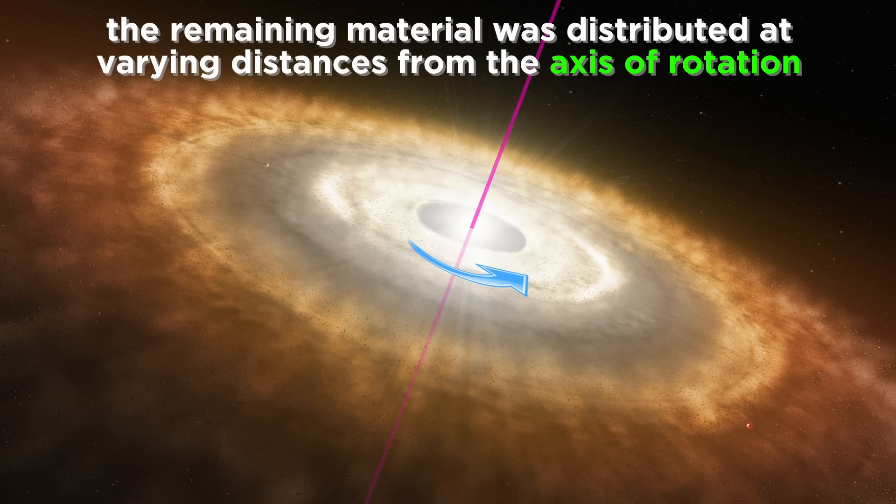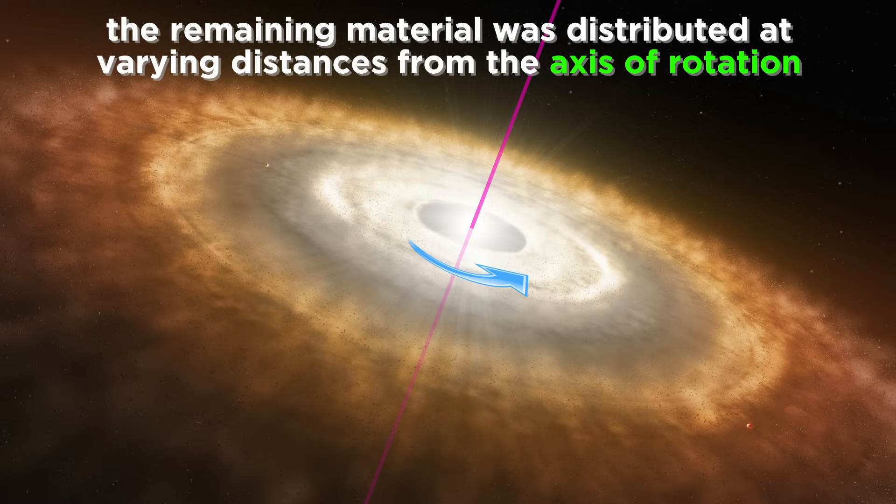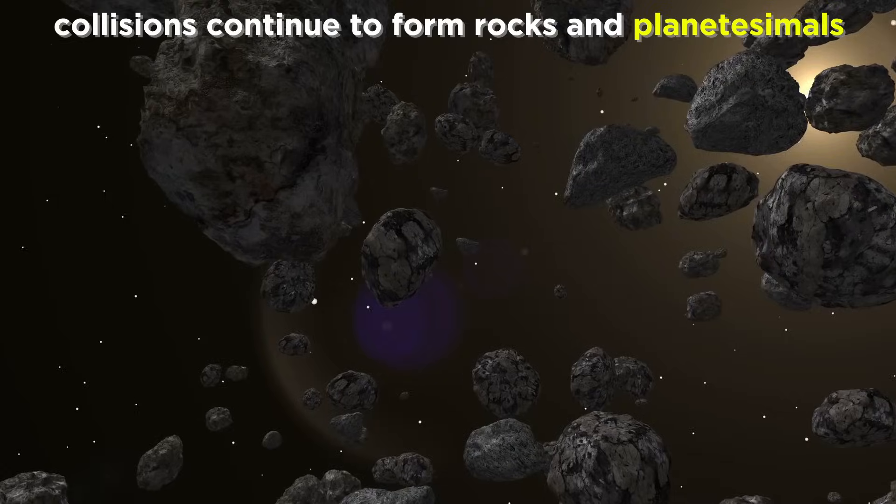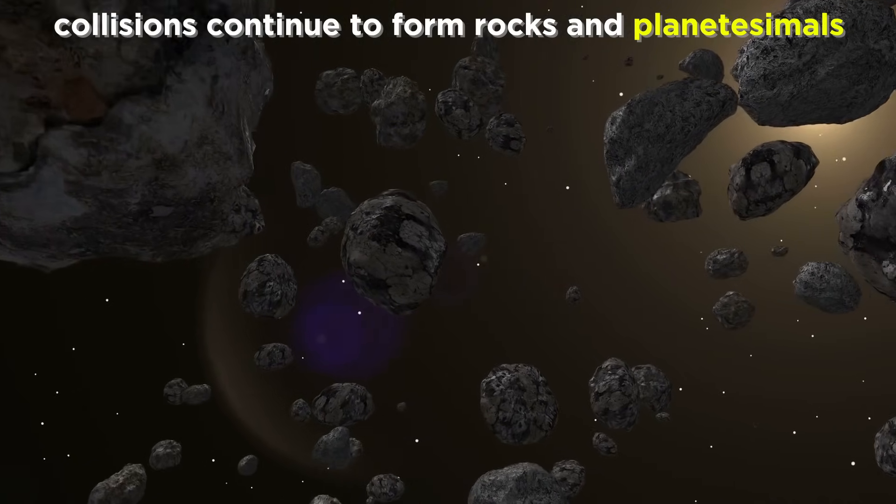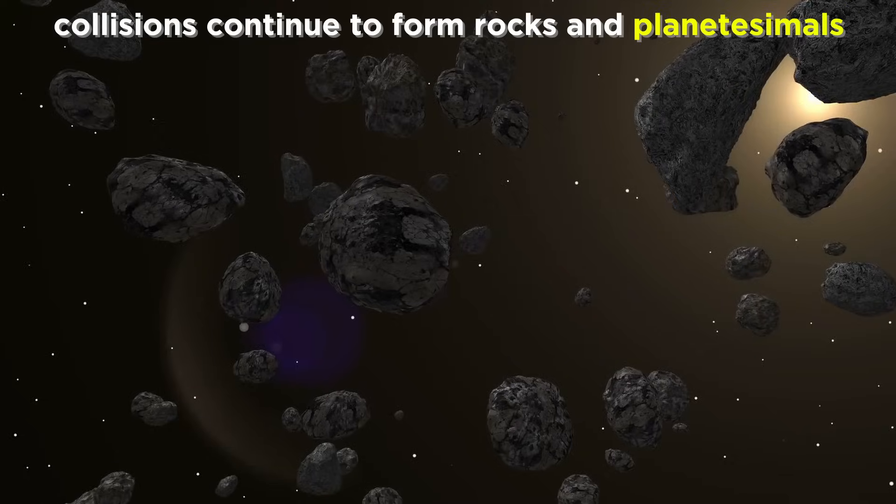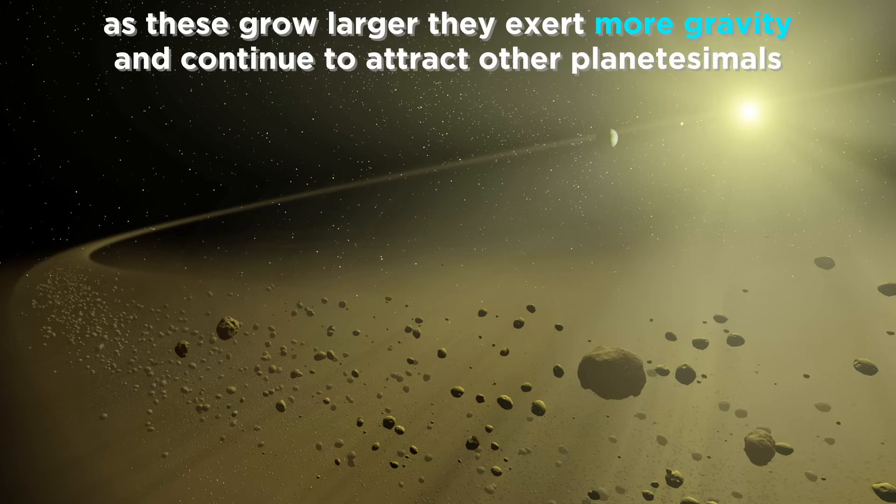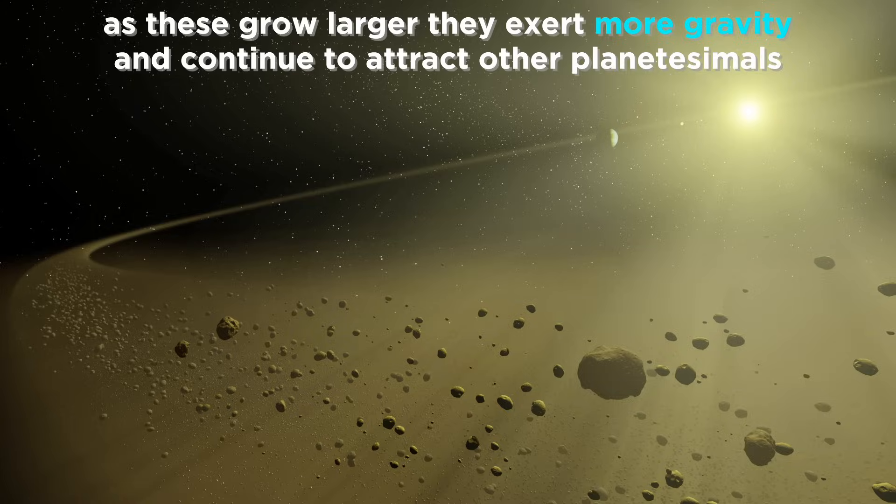Meanwhile, the remaining material was distributed at varying distances away from the axis of rotation. Then these tiny dust particles began to collide and stick together. These larger pieces continued to collide with others to form rocks, and then larger objects called planetesimals, increasing their gravitational influence as they grew, eventually attracting other planetesimals.